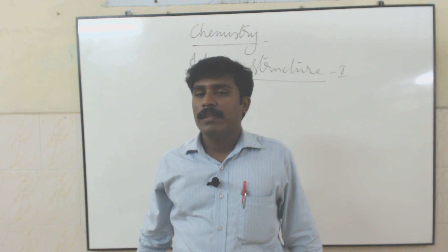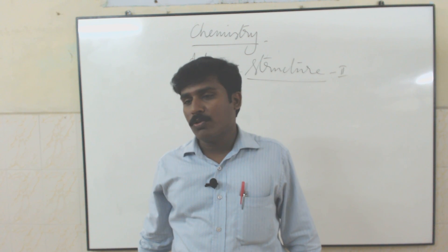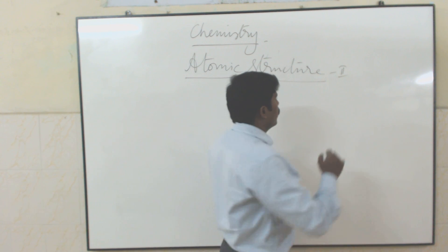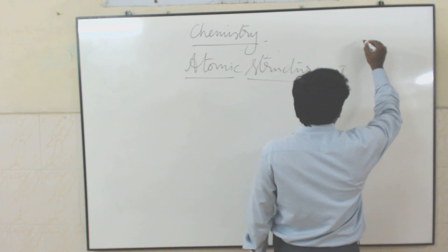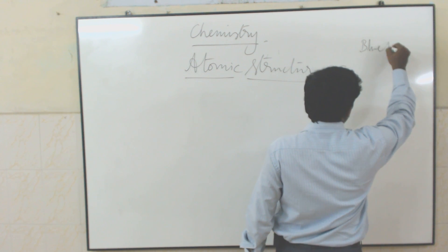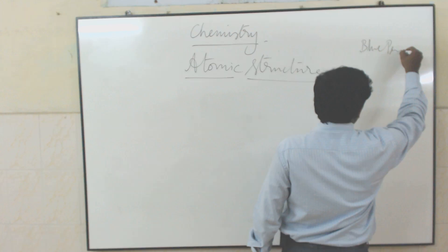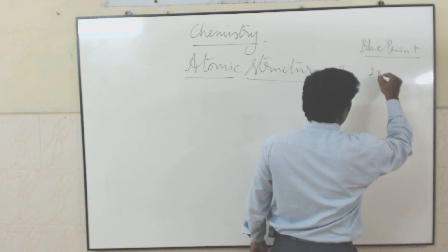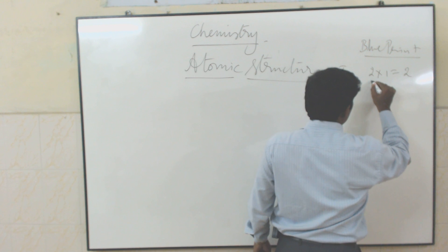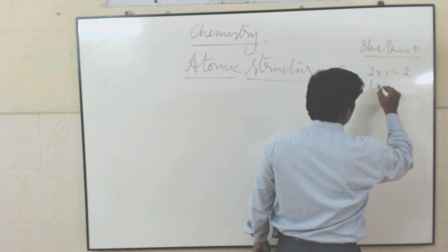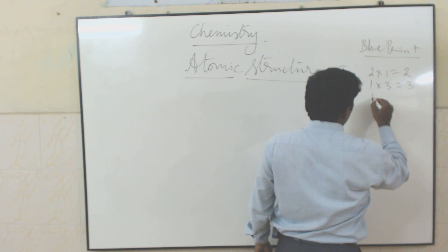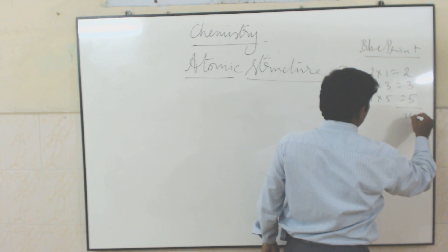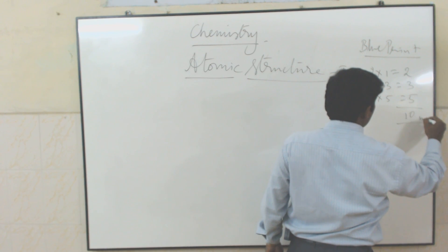The weightage, or blueprint, is: 2 one-mark questions, 1 three-mark question, and 1 five-mark question — all together 10 marks.